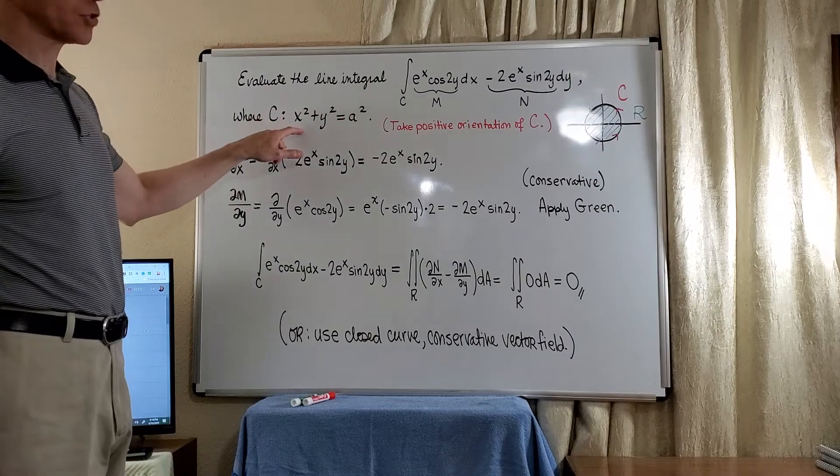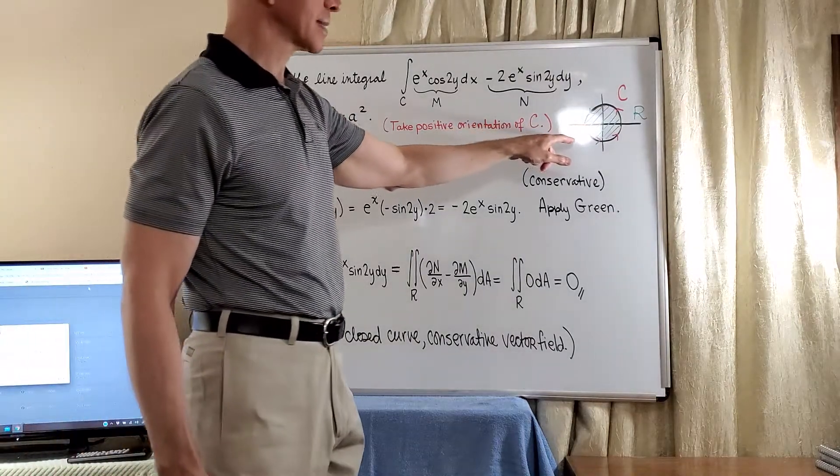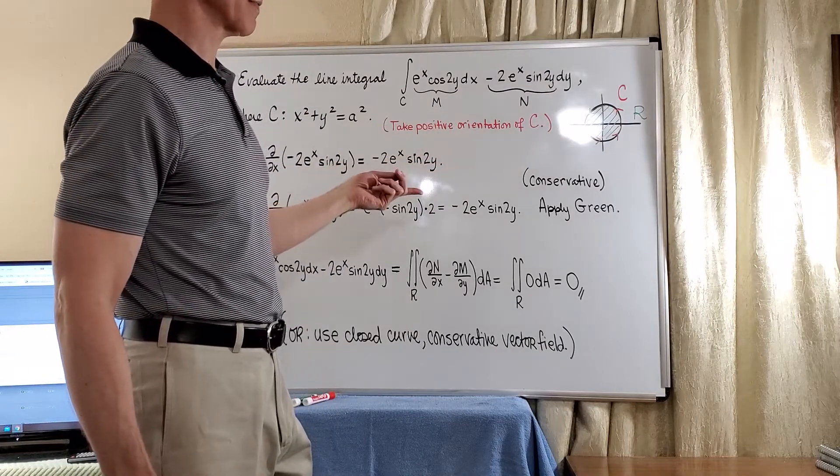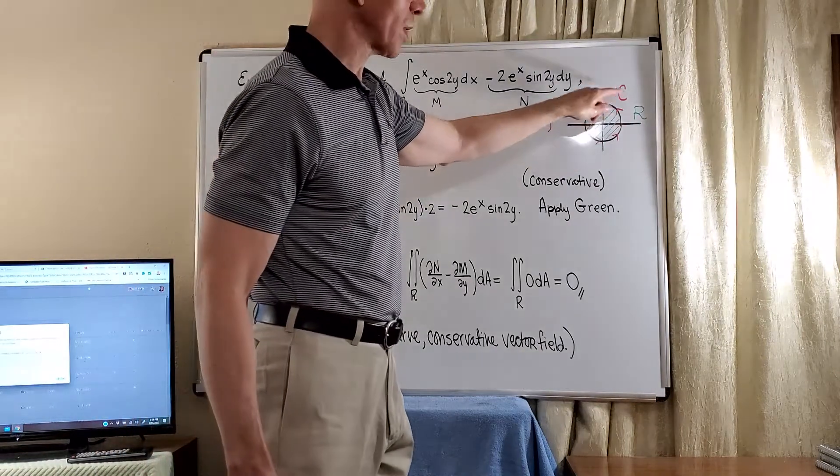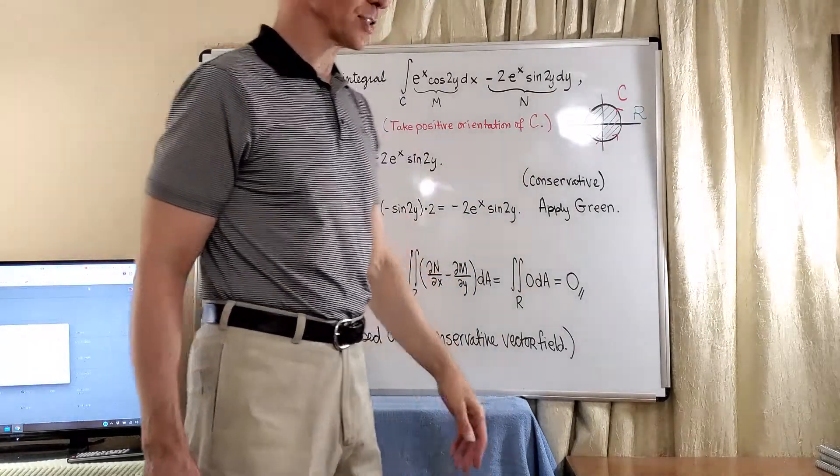where C is just the circle centered at the origin of radius A, something like this. And of course, we select the positive orientation so as we traverse the curve, the region, which I've shaded in green, lies to the left.